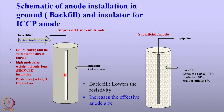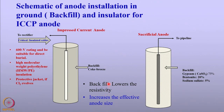In all cases — whether impressed current or sacrificial anodes — backfill is an important component. Backfill lowers the resistivity between the anode and the soil, and also increases the effective anode size used in resistance calculations; the dimension of the backfill, not the anode itself, is used when calculating ground bed resistance. Backfill is only required for soil applications; in seawater, which is highly conducting, no backfill is needed.